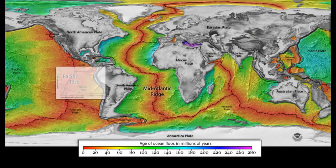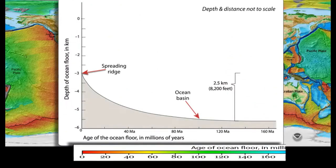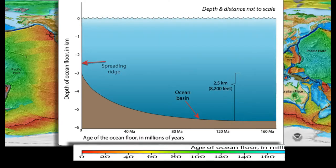Spreading ridges stand 2,500 meters higher than deep ocean basins. At a spreading ridge, the ocean depth is only about 3,000 meters.